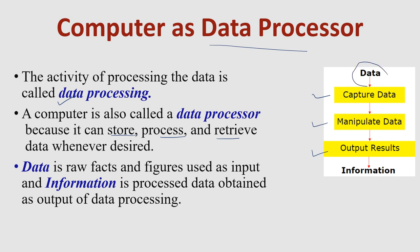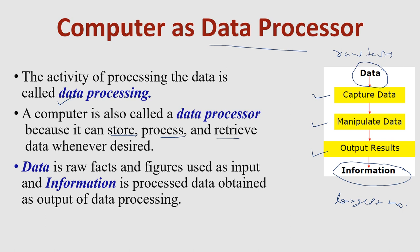The data which is inputted is raw facts and figures — for example, any random 10 numbers we input. That is data. The outcome is information: when the data is processed, we get information. For example, we inputted 10 numbers as data and found the largest number by processing them. So data is raw facts and figures used as input, and information is the processed data obtained as output.